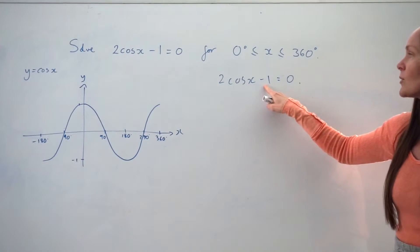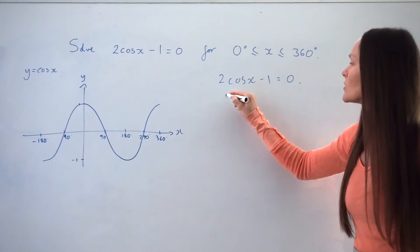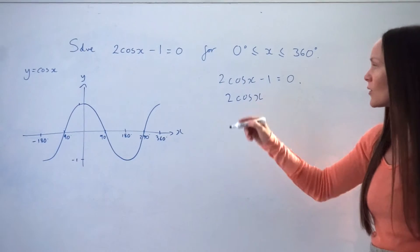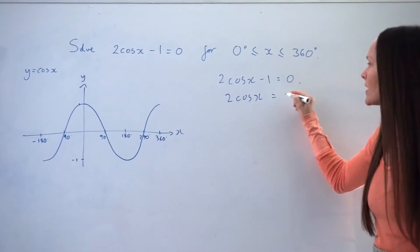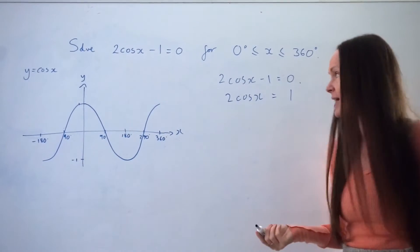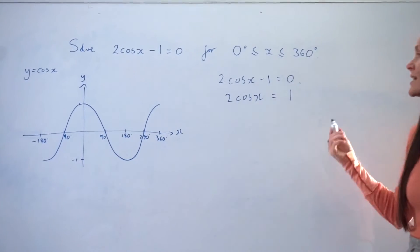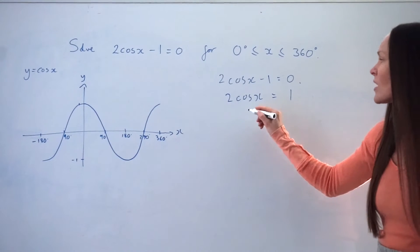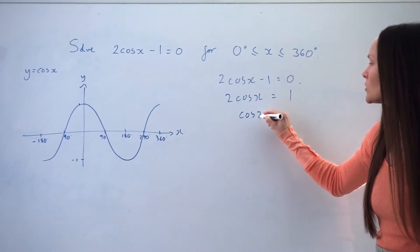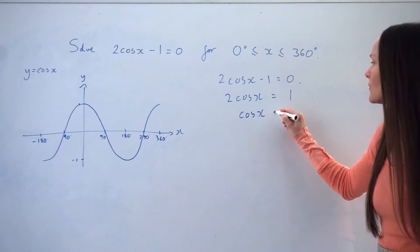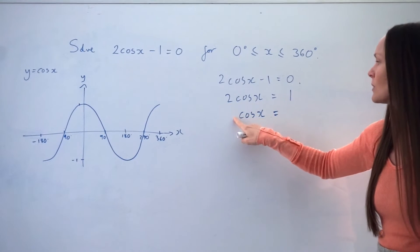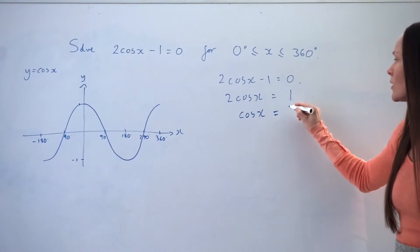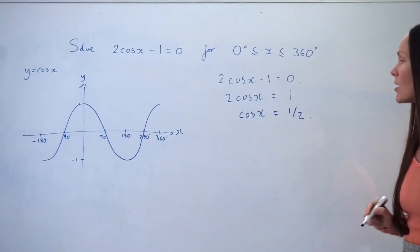First I'm going to add 1 to both sides. When I do that, I'm left with 2 cos x on the left-hand side and positive 1 on the right-hand side. Next, I have to divide by 2 on both sides. Dividing by 2 on the left just cancels to give me 1 cos x, and on the right-hand side I'm left with 1 half.